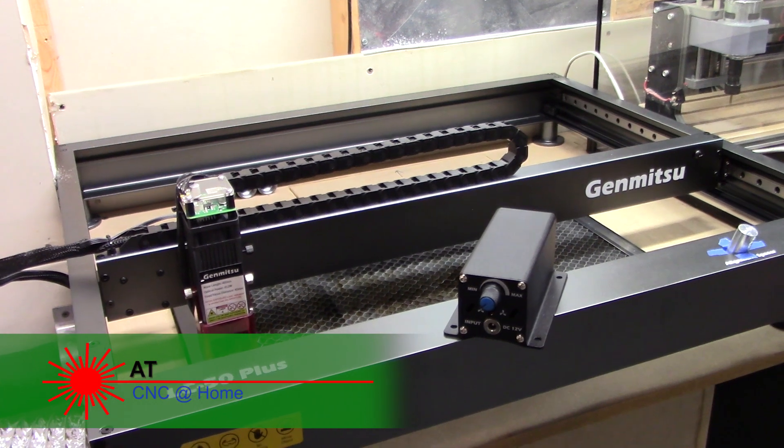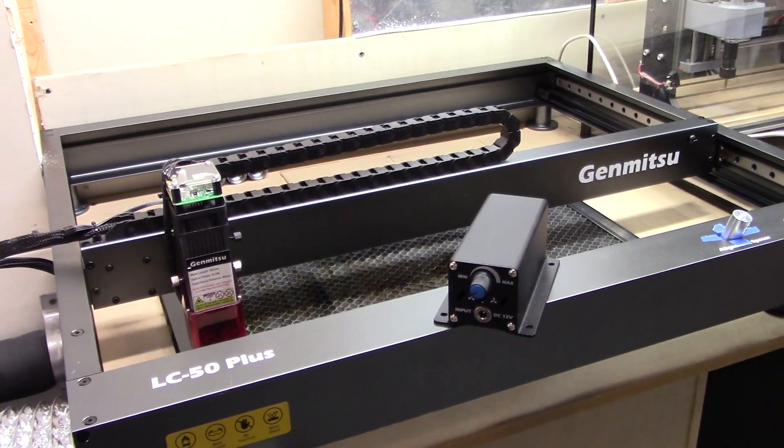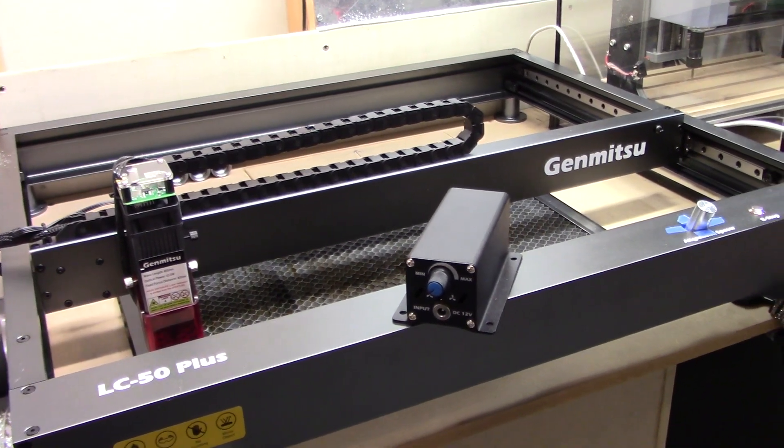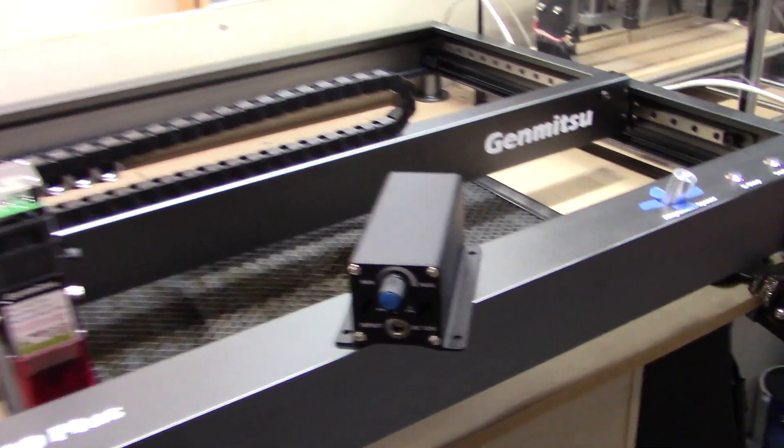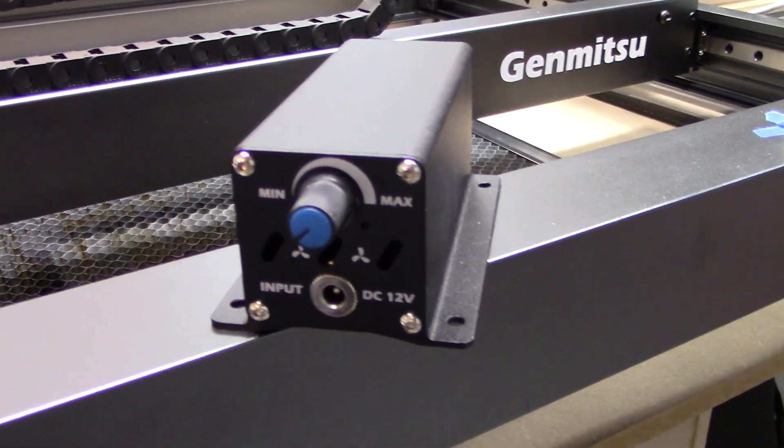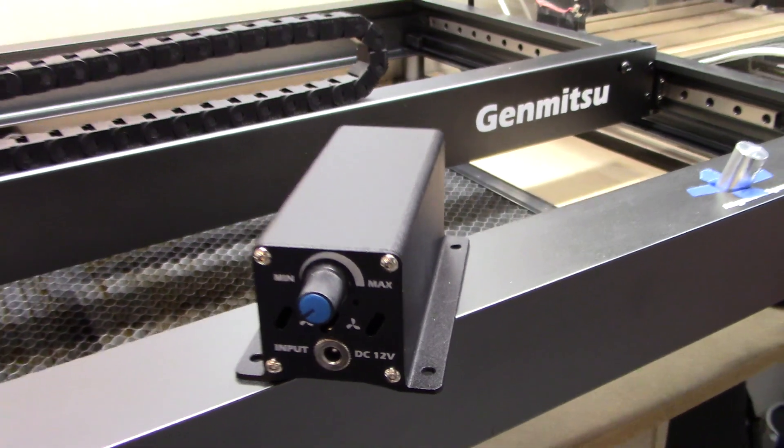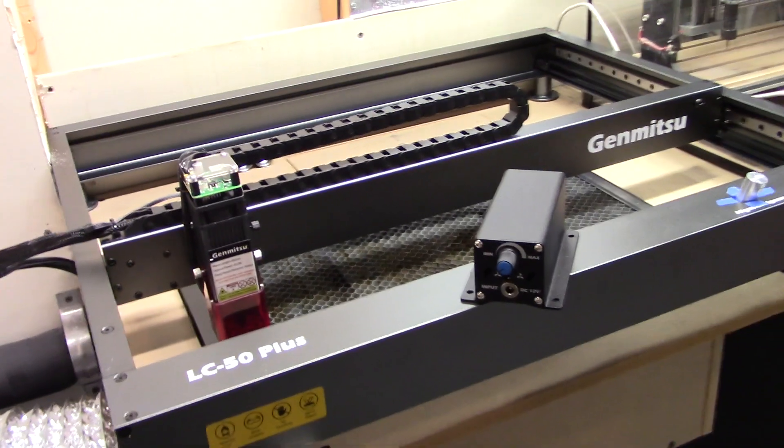The Genmitsu LC50 Plus laser came with this really nice air assist pump. You can see on the front it runs off of 12 volts DC, which is supplied by the laser.